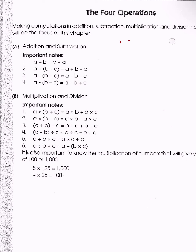Now when we have parentheses — for example, if we have A plus parentheses B minus C — if we have a positive sign in front of the parentheses, we're basically distributing the positive sign, which makes no difference in the sign. So A plus (B minus C) is just going to be A plus B minus C. There has been no change to the sign inside the parentheses.